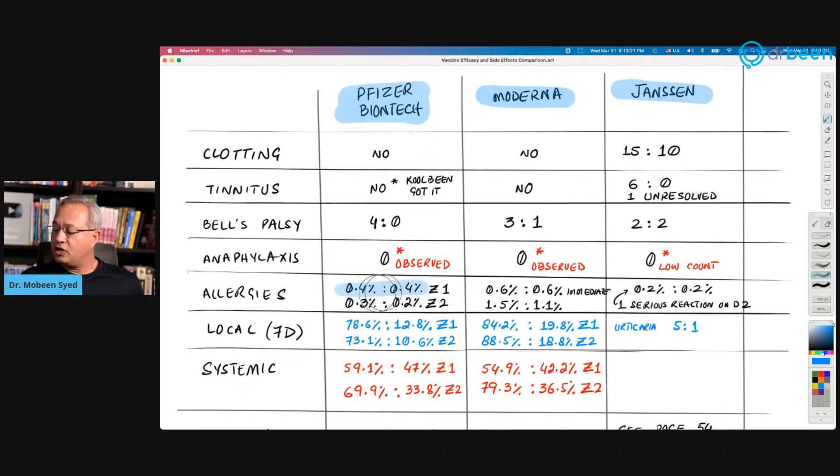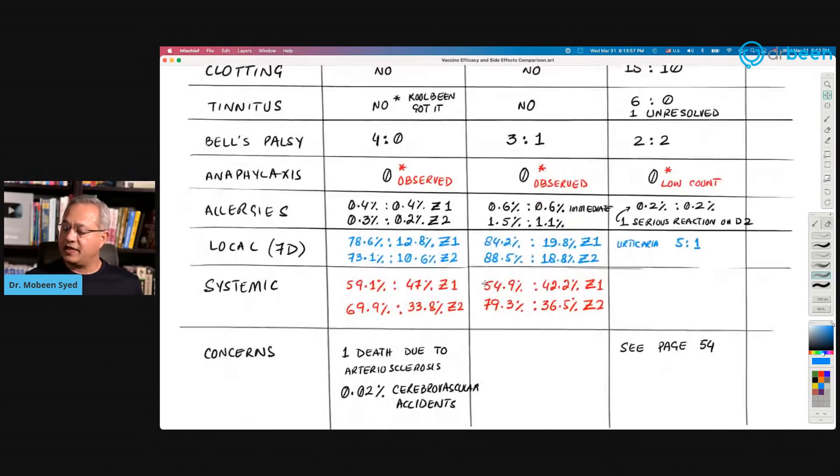Allergies. They all report some allergies that may be, but these are not anaphylaxis. These may be some allergic reactions, for example, a rash or urticaria or some other allergic reaction, but not rising up to anaphylaxis. Local reactions—that is pain at the site of injection or bleeding or rash or discomfort. These are just natural, I think, understandable. In case of Pfizer, 78 percent. In case of Moderna, 84 percent. In case of Johnson and Johnson, urticaria, five to one.